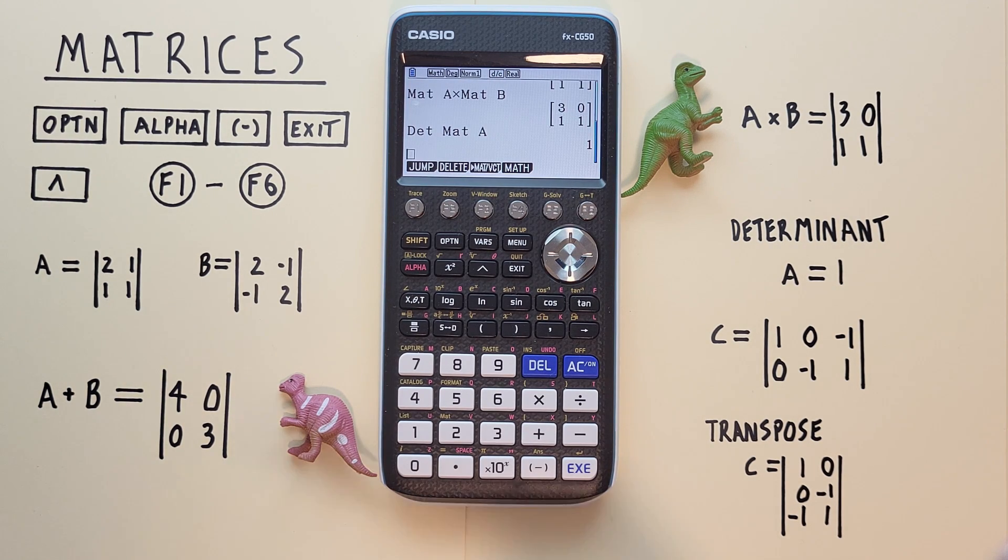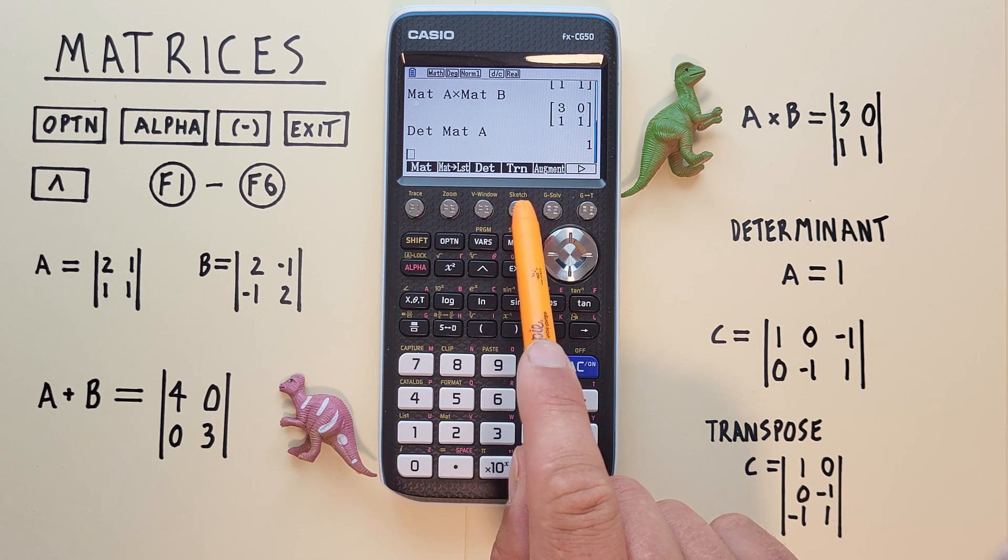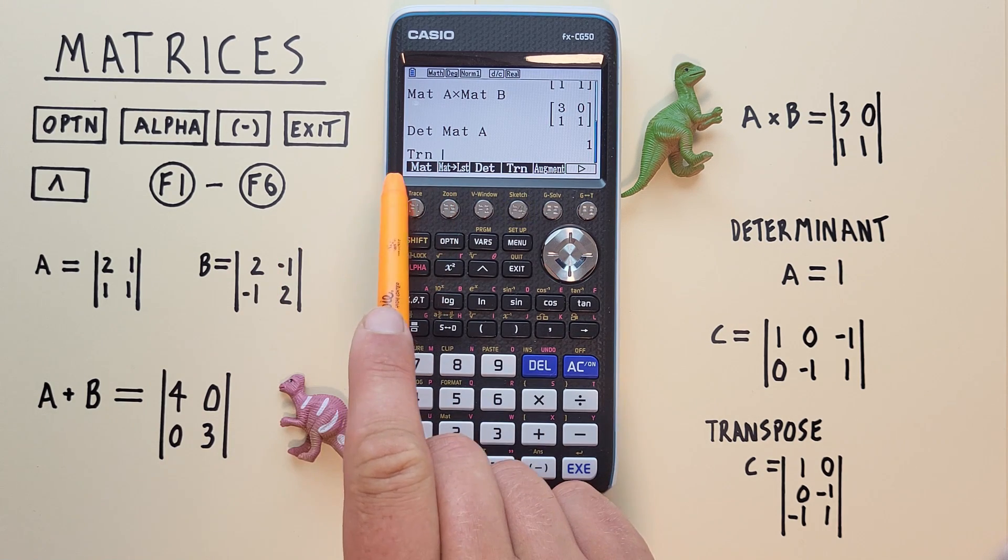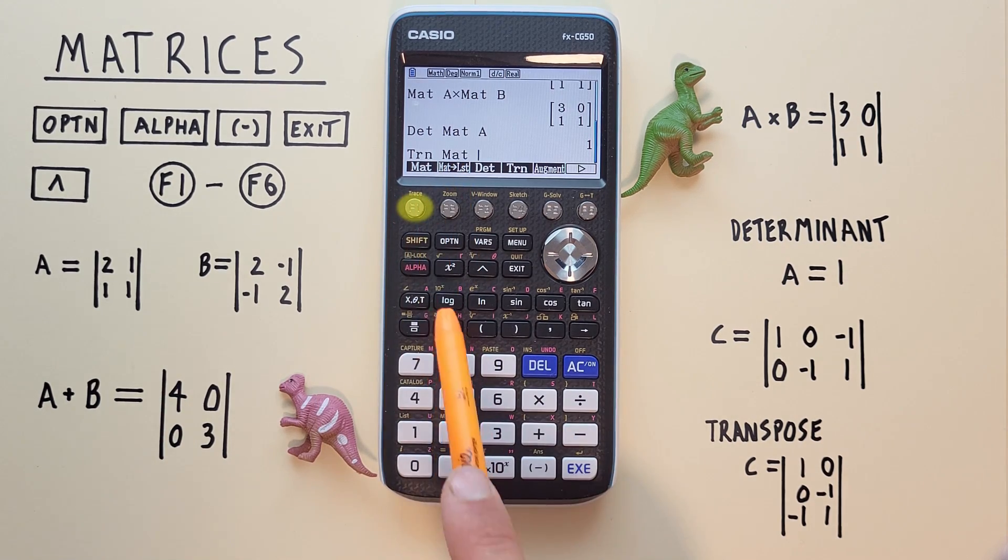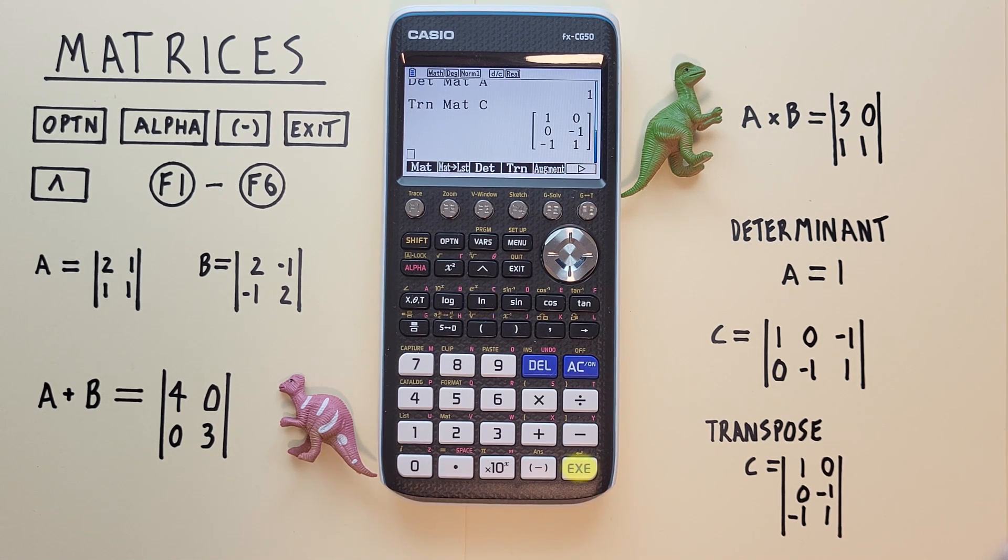Let's say we want to transpose this C matrix. To get to our matrix functions, again we hit OPTION, then F2, and here we see our matrix functions. If we want to transpose, we would do F4 TRN. There we go, TRN for transpose. And then we want to do that to matrix alpha C. Hit ENTER, and we see we've transposed our 2 by 3 matrix into a 3 by 2 matrix.